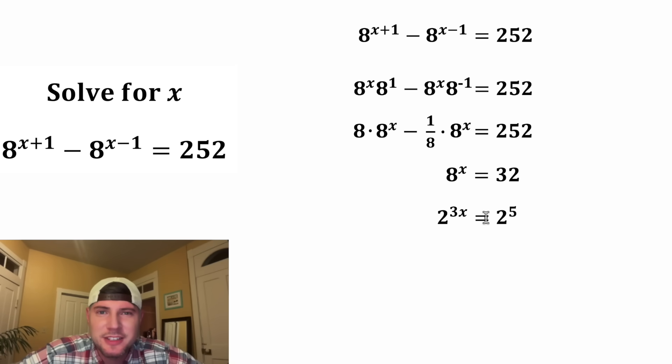So now we have 2 to the power of 3x equals 2 to the power of 5. This will only be true if 3x equals 5. Next, we can divide both sides by 3, and we end up with x equals 5 thirds.